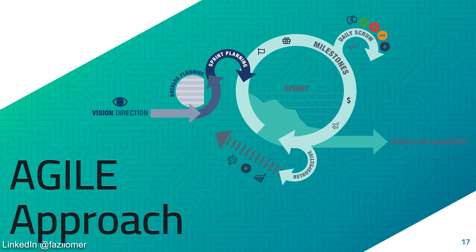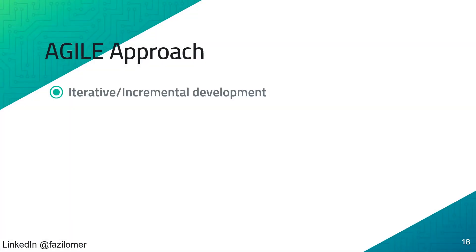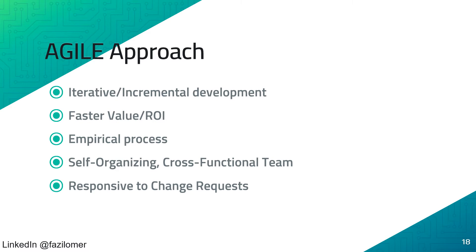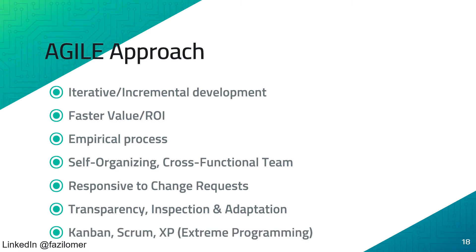Now let us look into the Agile approach of project management. The Agile approach is used in projects where deliverables can be achieved iteratively or incrementally, with each increment producing a partial return of investment for the client. Unlike the predictive approach, Agile adopts an empirical process rather than planning everything upfront. The Agile team is self-organizing and cross-functional. It is responsive to change requests, whereas the predictive approach does not accept change easily, especially in the later stages. Transparency, inspection, and adaptation are the pillars of the Agile approach. Kanban, Scrum, and Extreme Programming are some of the frameworks used within Agile.